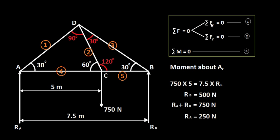Going back to the equilibrium conditions: the condition of equilibrium for a force system is that forces in the x direction, forces in the y direction, and all moments should be zero — summation of all these cases should be zero. So let's try to find the support reactions at A and B.